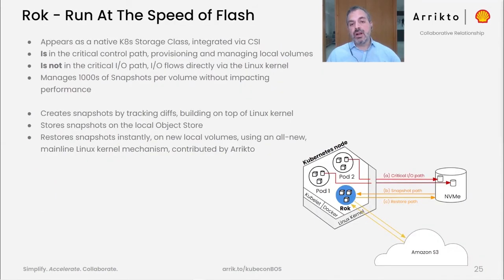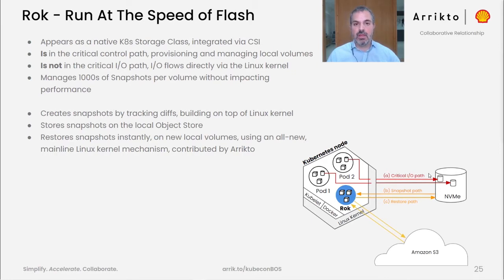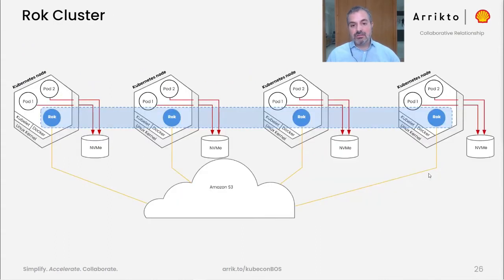Here's how ROC works underneath. ROC runs as a pod on the side of your workload pods on a single Kubernetes node. These pods have a direct path — path A — via the kernel to local storage. ROC sits on the side, monitors the I/O operations, retrieves the changed data, and produces a new snapshot which it archives into S3 — this is path B. At a later time, ROC can restore data from this snapshot — path C on the slide.